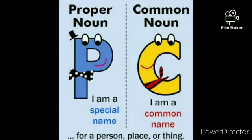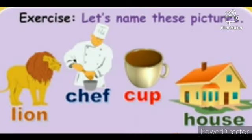Now all of you remember: a proper noun is a specific name for a person, place or thing. And a common noun is a general name for a person, place or thing. Thank you very much.